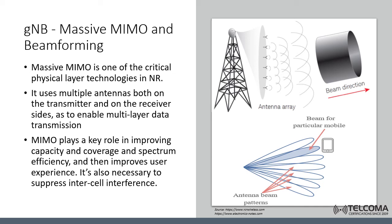At high frequency, the size of a single antenna is very small and the area for receiving energy is also very small. To overcome this small receiver area at high frequency, we need to use a large number of transmission antennas, which is massive MIMO. One of the drawbacks of millimeter wave is that signals are easily blocked by objects and tend to weaken over long distances. Massive MIMO and beamforming can help by focusing the signal in a concentrated beam pointing only in the direction of the user, rather than broadcasting in many directions at once.